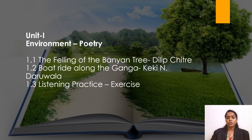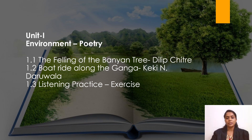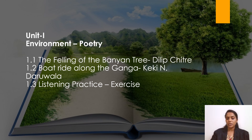Let's get into Unit 1. Our Unit 1 is Environment Poetry. Subunit 1.1 is 'The Felling of the Banyan Tree' by Dilip Chitre — a beautiful poetry about the felling of a banyan tree. 1.2 is 'Boat Ride Along the Ganga' by K.K.N. Darwalla, and 1.3 is one of the most important communication skills, that is listening practice.